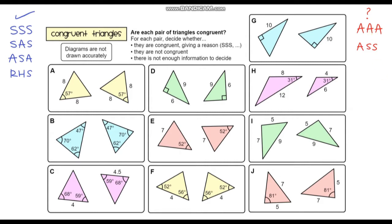What we're going to do in this video is go through these pairs of triangles. For each pair we're going to decide whether they are congruent, whether they are not congruent, or whether there is not enough information to decide. And if they are congruent, we need to give one of our congruency axioms. Just be careful — the diagrams are not accurately drawn, so you can only use the data from the pictures. I encourage you to pause the video and have a go yourself first.